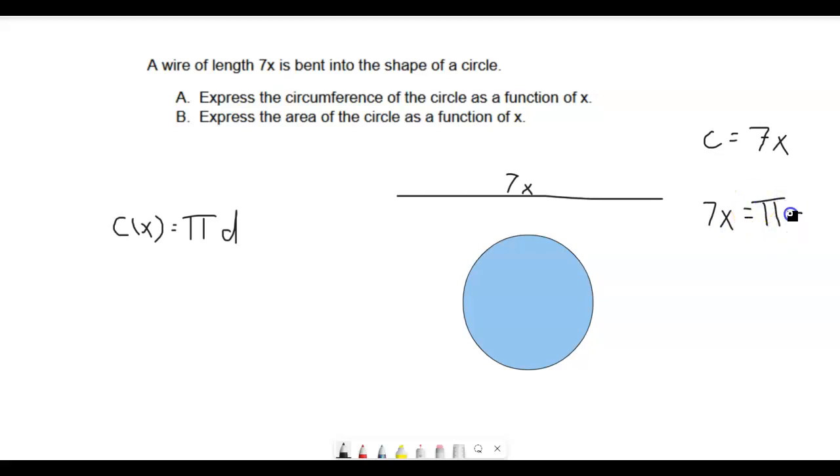pi times your diameter, right? So we know that the circumference of this circle is equal to 7x, which is equal to pi times the diameter. The diameter is the length across the circle. So if we just solve for d here by dividing both sides by pi,